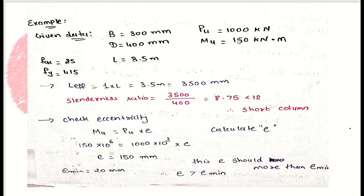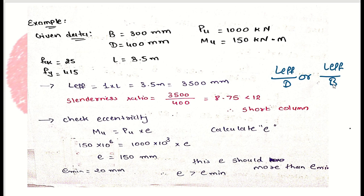Step 2 is to determine whether the column should be designed as a short column or a slender column. We calculate the slenderness ratio: if it is less than 12 in both directions, the column can be designed as a short column. The formula is L_effective / D or L_effective / B. Here, 3500 / 400 = 8.75, which is less than 12.